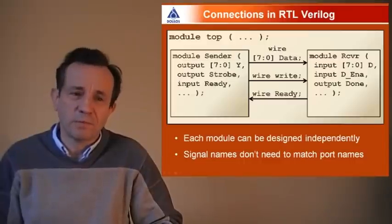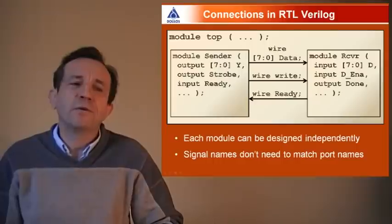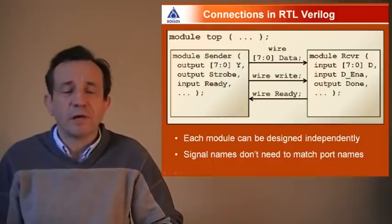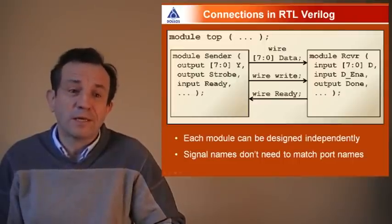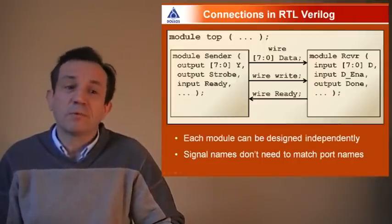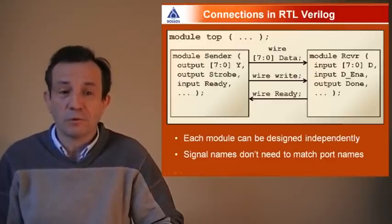So here I've got two simple Verilog modules connected together by three connections, and you can see that the sender module over on the left has an output called Y, and that's connected to a wire called data, and then when that wire called data reaches the other receiver module on the right, it's connected to a port called D.